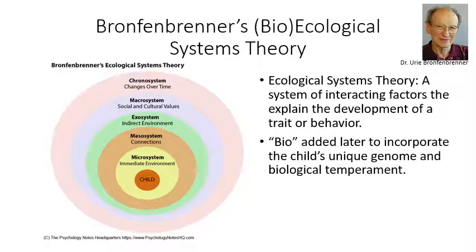Let's begin with Bronfenbrenner. He was interested in the factors that impact a child, and he calls his model the ecological systems theory, which is a system of interacting factors to explain the development of a trait or behavior. Later, the prefix 'bio' was added as more understanding of the role of biology came to the forefront.